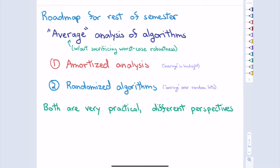It's going to be a very qualified sense of the word 'average,' where we won't be sacrificing any of the robustness of worst-case analysis. One thing really nice about worst-case analysis is it's very pessimistic, but then it becomes very reliable when you reuse things thereafter. Although we will relax this perspective a little bit, we won't lose those very strong theoretical guarantees.